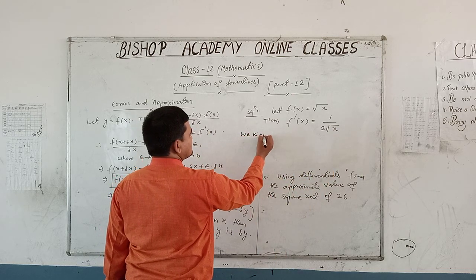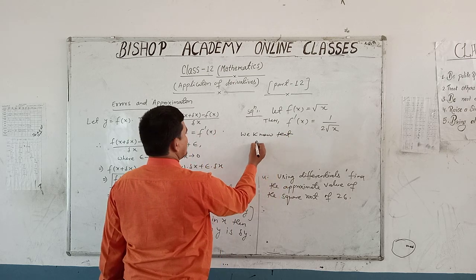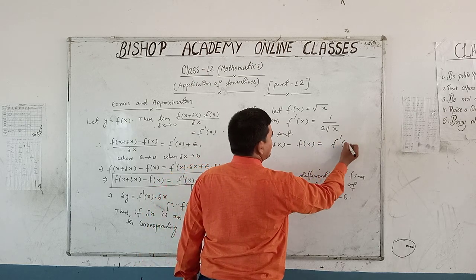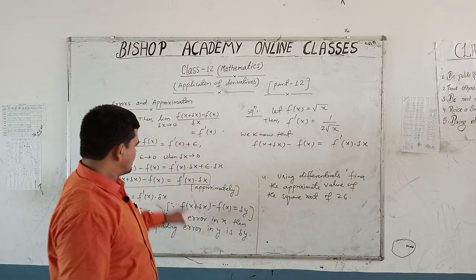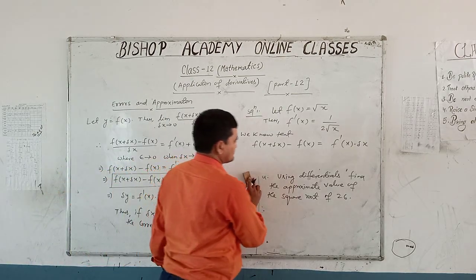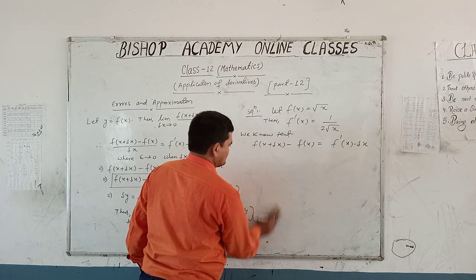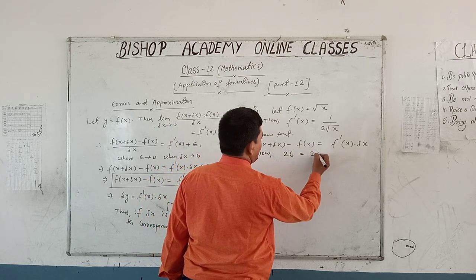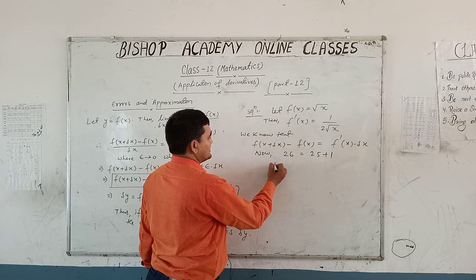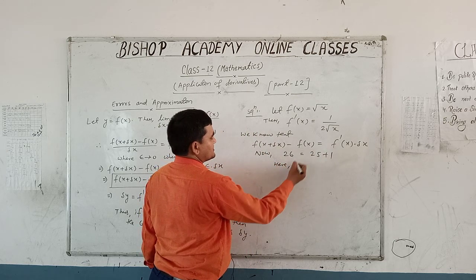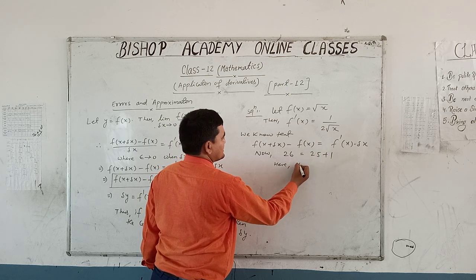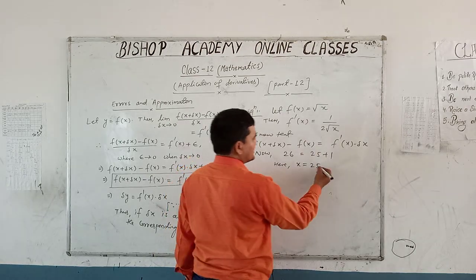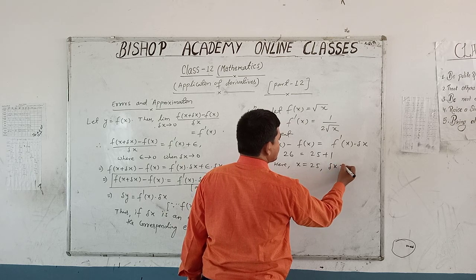We know that f(x + delta x) minus f(x) equals f'(x) into delta x. We use this formula. Now, 26 can be written as 25 plus 1. Here, 25 is taken as x, and 1 is small compared to 25. Therefore, we write delta x equal to 1.